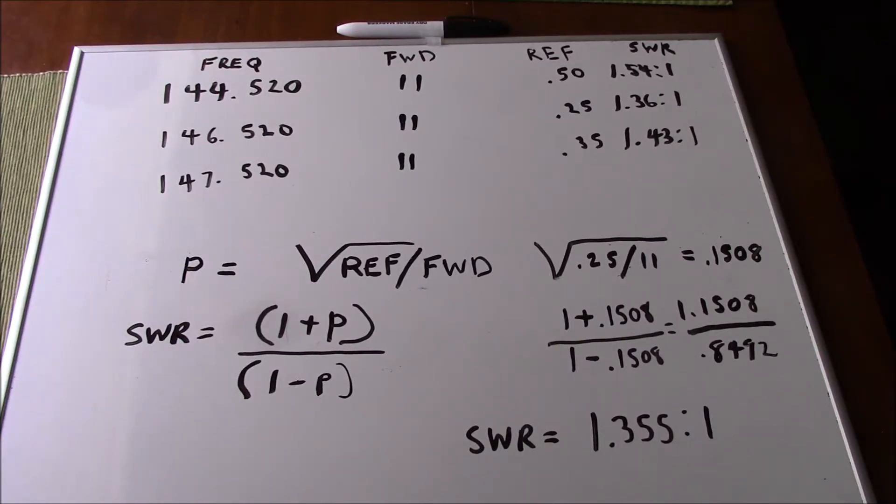And then we change our frequencies and go to both edges of the band and record our results. We're going to give you the results of our antenna here and testing it with the reflective power meter. We start at 146.520. I always start midstream. Forward was 11 watts and reflected was 0.25 or a quarter watt. And that gives us an SWR of 1.36 to 1. We also go low, 144.520. We had 11 forward and a half a watt reflected, which gave us an SWR of 1.54 to 1. And then we also went to the higher range, 147.520. We had 11 watts forward and 0.35 of a watt reflected for an SWR of 1.43 to 1. So all of those are acceptable and you can see that this definitely favors the higher end and the lower end. So throughout the 2 meter amateur band, you're going to be good to go.